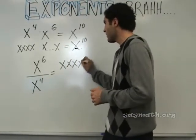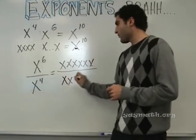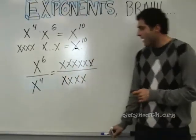One, two, three, four, five, six. One, two, three, four. And notice, what is x over x?